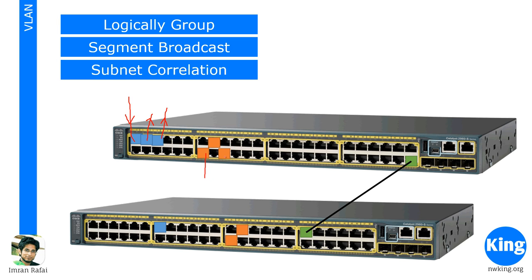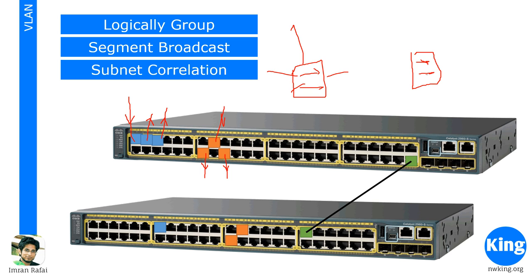So this is as if you have taken two different switches. VLAN is a logical way of grouping or separating switch ports into different networks. For all practical purposes, these three blue ports are connected to a different network, and these three red ports are on another. Basically, devices in different VLANs cannot communicate with each other.